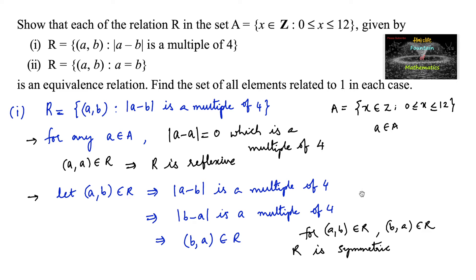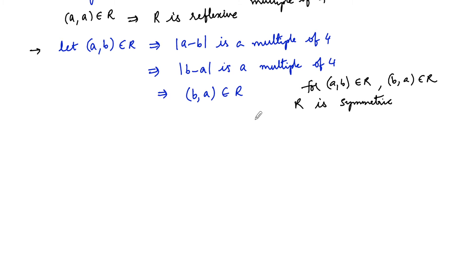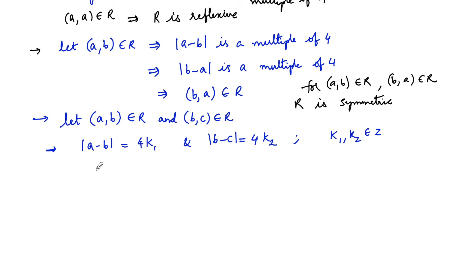For transitivity, let (a, b) ∈ R₁ and (b, c) ∈ R₁. Then |a - b| is a multiple of 4, so |a - b| = 4k₁ for some integer k₁, and |b - c| is a multiple of 4, so |b - c| = 4k₂ for some integer k₂. We can write a - b = ±4k₁ and b - c = ±4k₂.